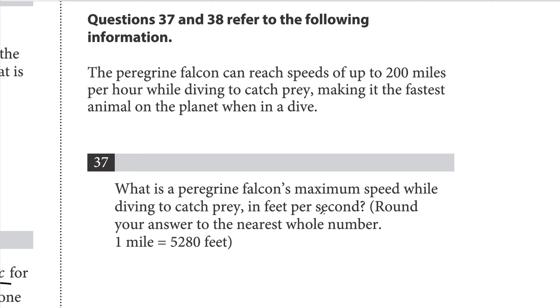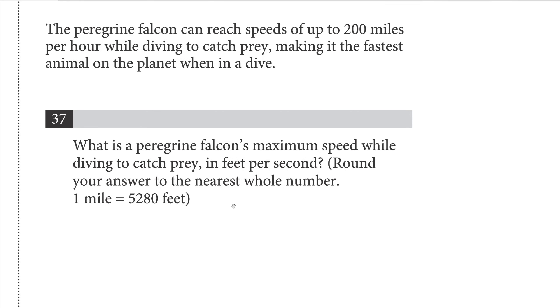The peregrine falcon can reach speeds up to 200 miles per hour while diving to catch prey, making it the fastest animal alive on the planet when in a dive. What is the peregrine falcon's maximum speed while diving to catch prey in feet per second? Round your answer to the nearest whole number. So let's convert this into feet.